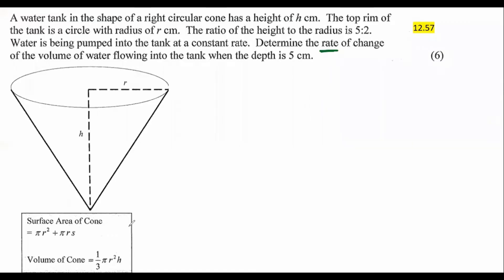Let's quickly read this question. It says that a water tank in the shape of a cylindrical cone has a height of H. They're giving us all the information. This is quite important — let me highlight this. It says that the ratio of the height to the radius is five to two. So mathematically you can say that H over R is the same as five over two.